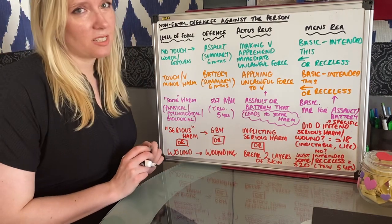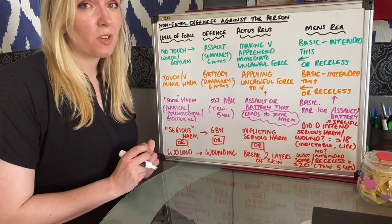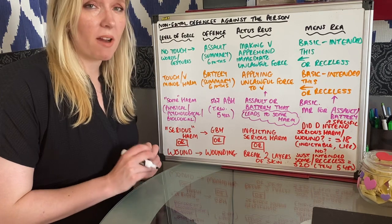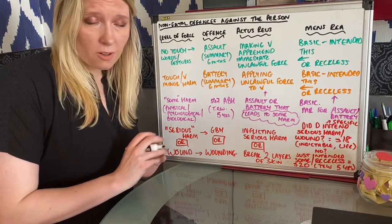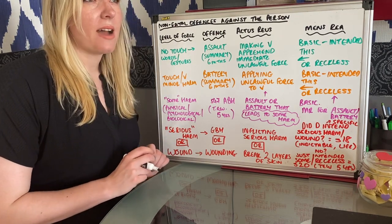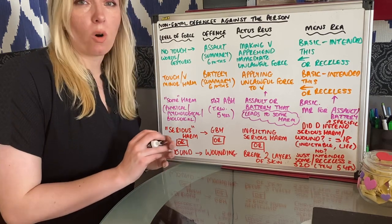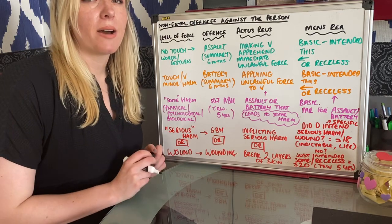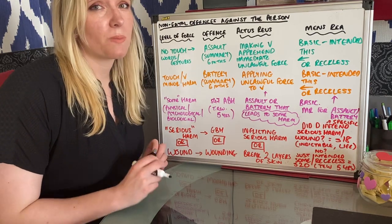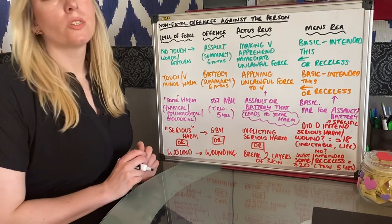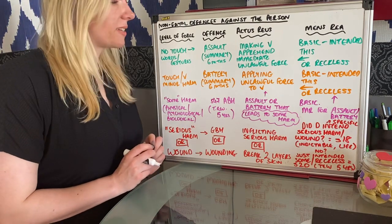So the very first thing that you need to be able to do is identify the crime correctly. If you don't identify the crime correctly, you're going to go on the completely wrong path. Now there is wiggle room in the exam, and there are many offenses that could be one of two, and you'll get credit no matter which one you pick as long as you explain your rationale.